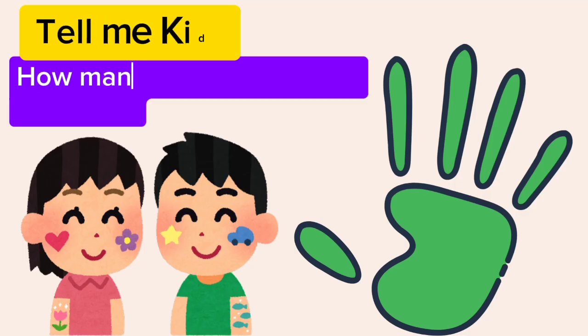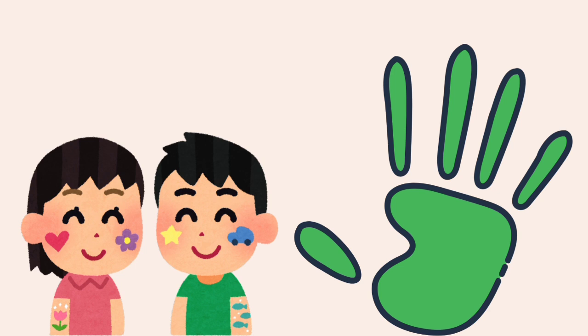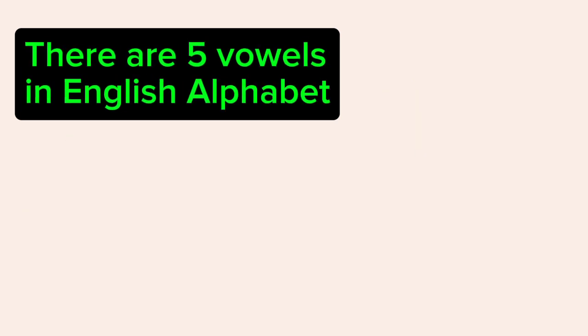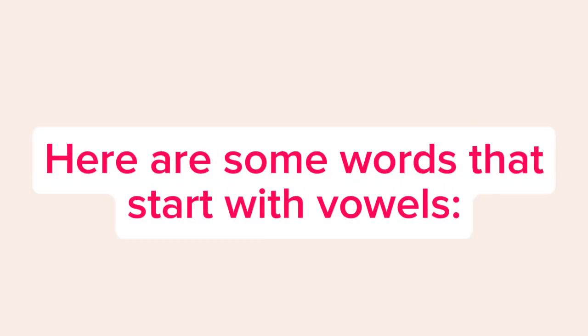Tell me kids, how many vowels are in the English alphabet? There are five vowels in the English alphabet. Correct! A-E-I-O-U. Here are some words that start with vowels.